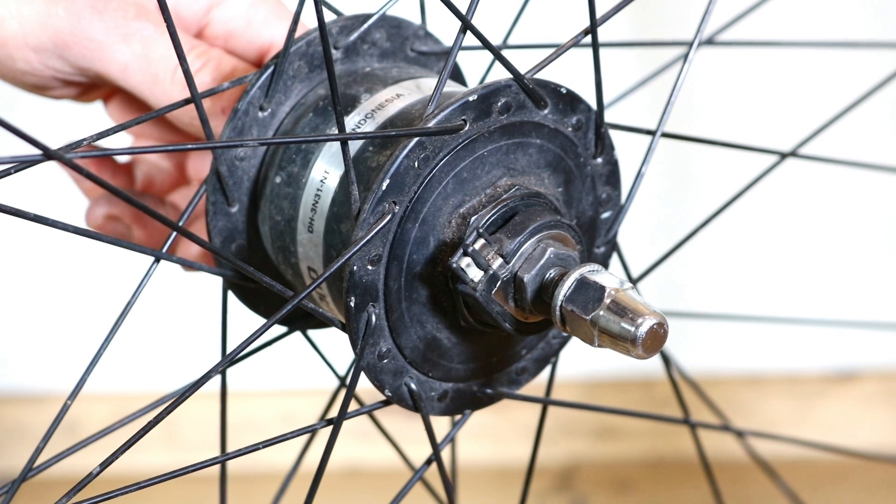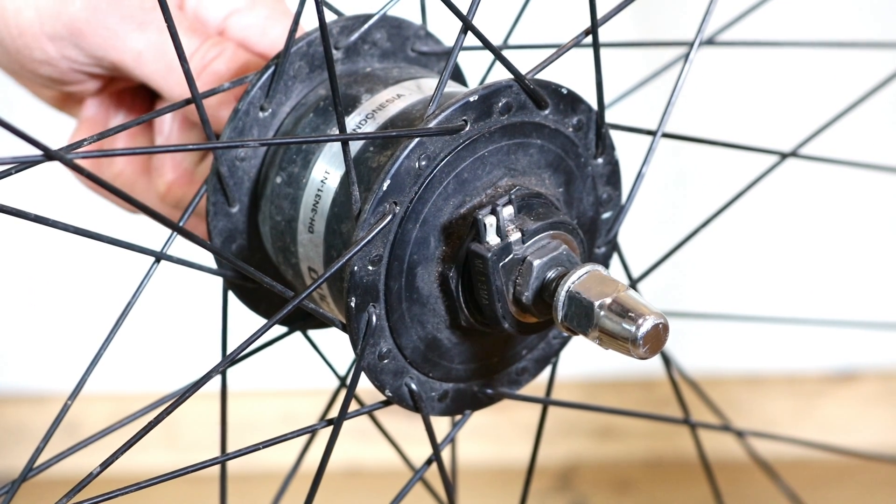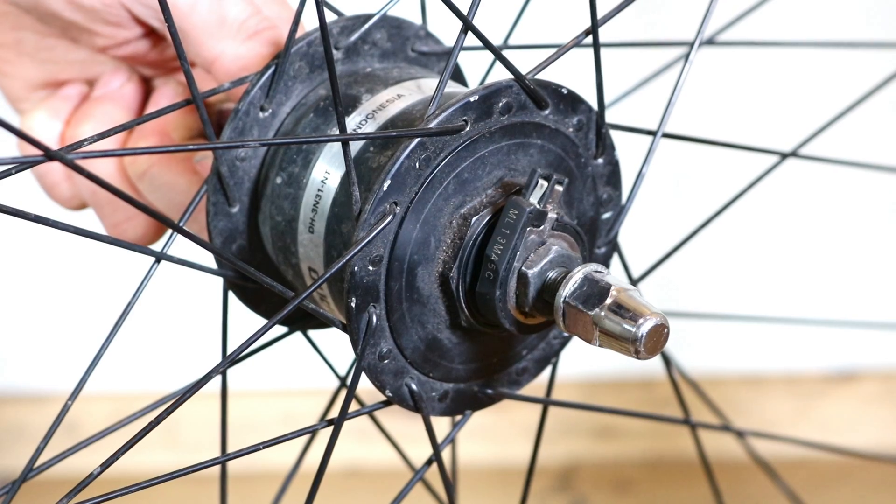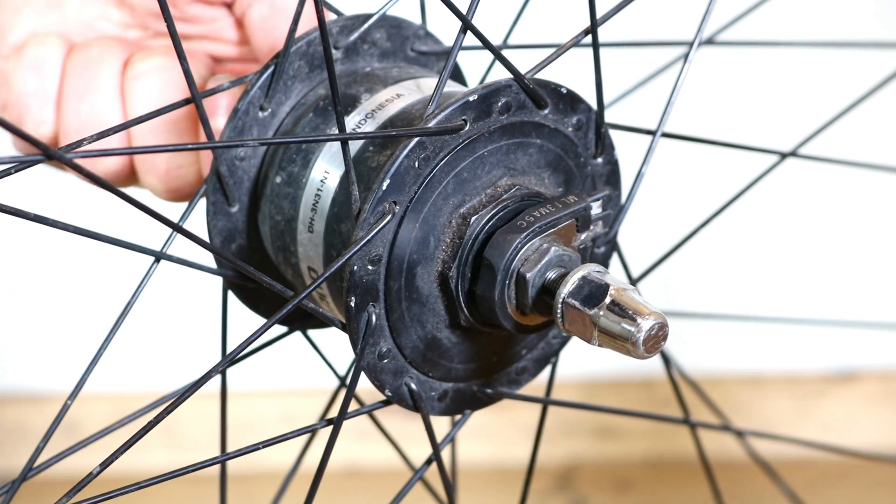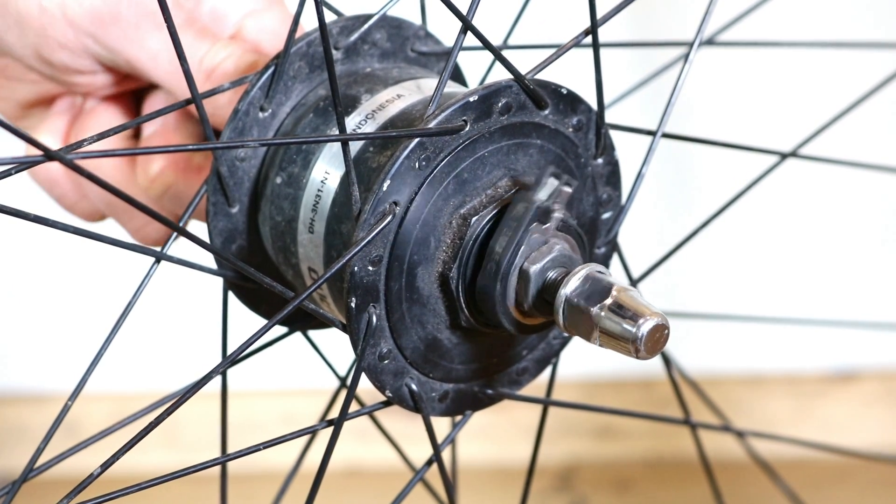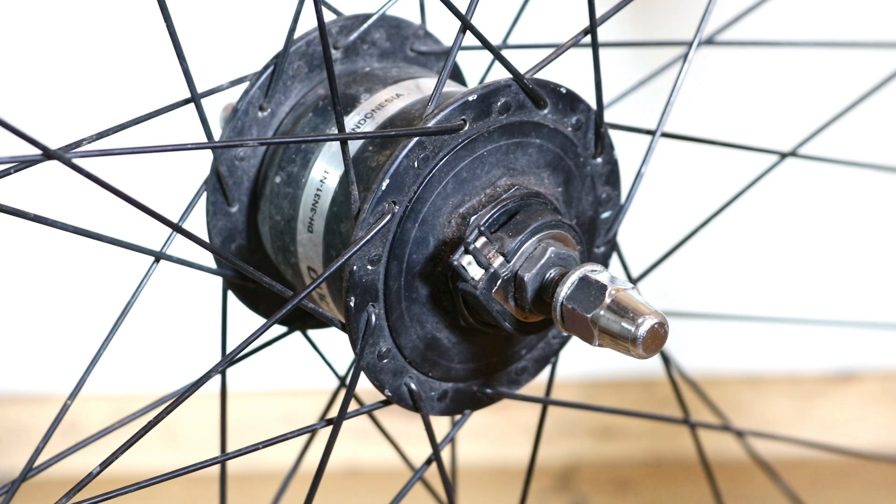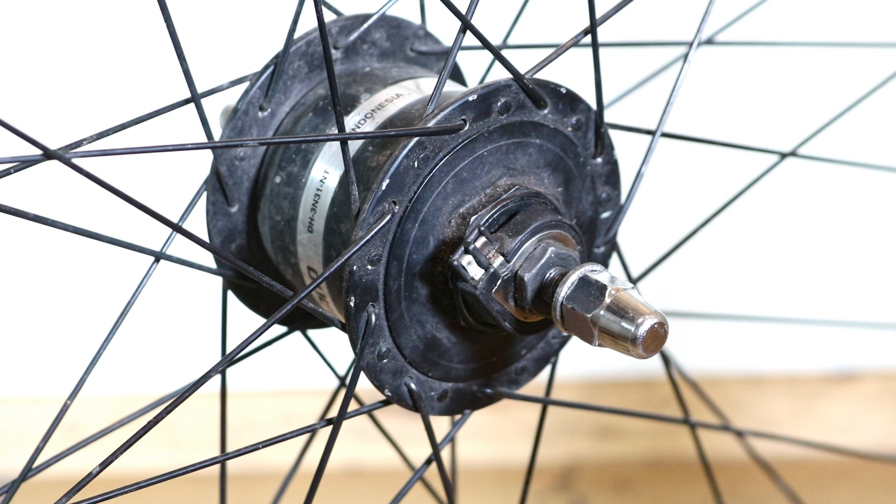Place the wheel on the ground and spin the axle to sense the resistance. This drag might feel a bit like the bearings are too tight, but that's normal. Remember the level of this resistance because it will be useful when you tighten the cones on the axle later on.